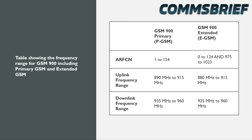Now let's have a look at something called ARFCN, or Absolute Radio Frequency Channel Numbers, which basically means separate frequencies for uplink and downlink. Each ARFCN is a combination of uplink and downlink channels taken from the frequency range specified for uplink and downlink in GSM. The uplink frequency range in primary GSM is 890 to 915 MHz, then there's a guard band, and then the downlink range starts from 935 to 960 MHz.